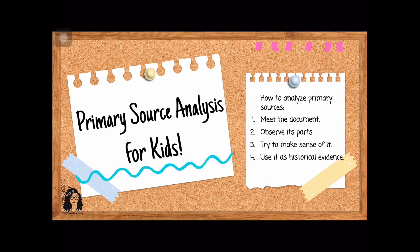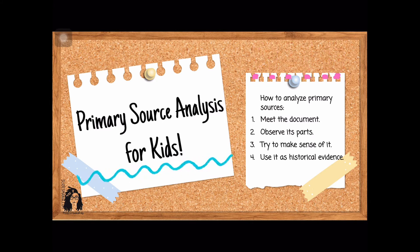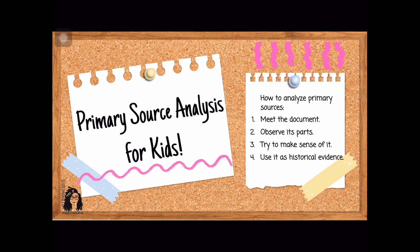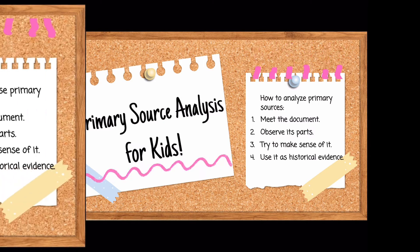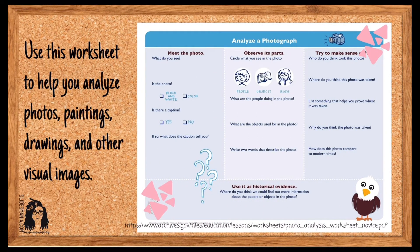Welcome everybody to primary source analysis for kids. When we look at a primary source we want to get to know the item, observe all the parts, try to make some sense of it, and then we can use it as historical evidence. To analyze this image we will be using a resource from the National Archives — I will put the link below so you can access it, but you can always go to archives.gov where they have worksheets for analyzing different types of primary sources.